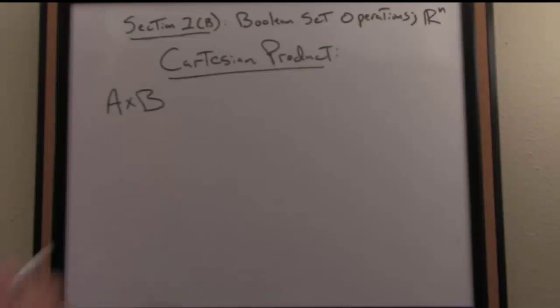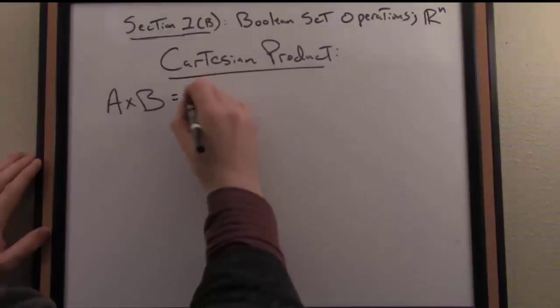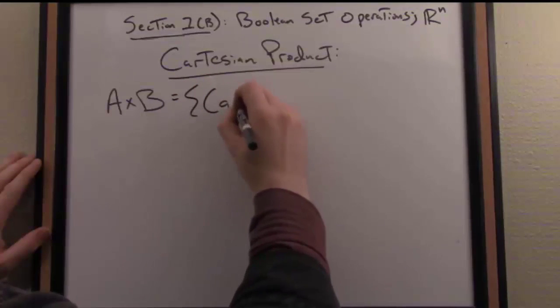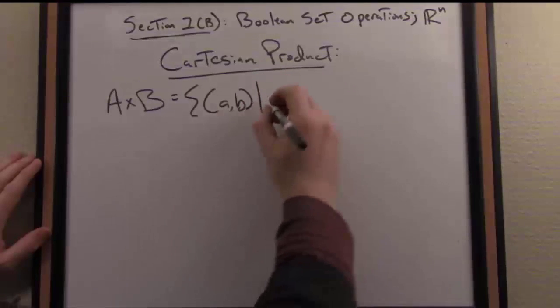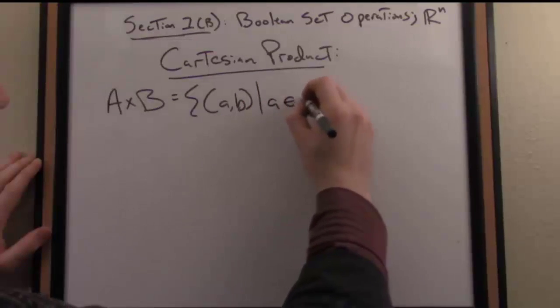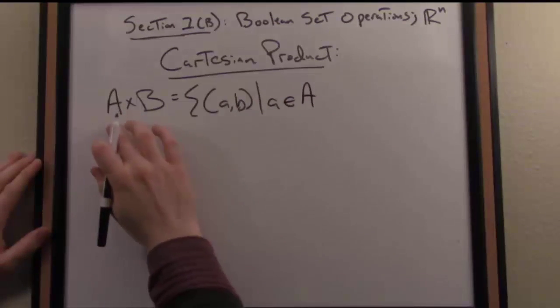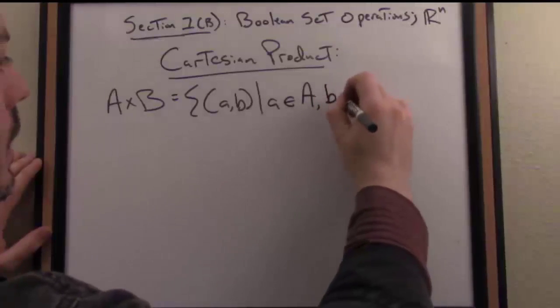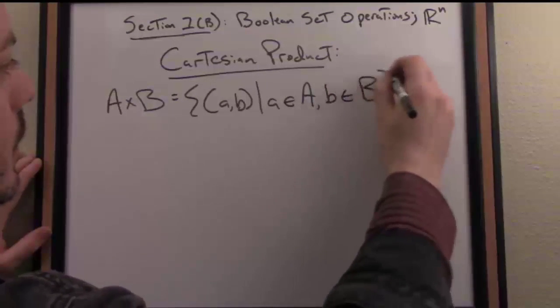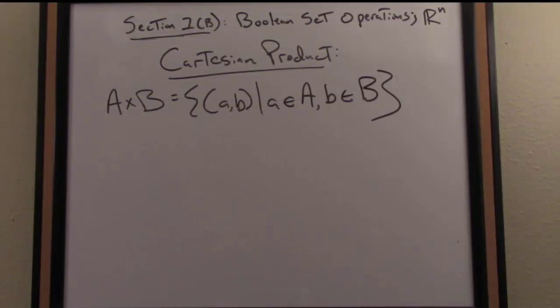If I have two sets A and B and I take the Cartesian product, or you can just say the product, then that is by definition the set of all ordered pairs A comma B such that A, the left element, comes from the first set or the left set and the B, the right element, comes from the second set or the right set. So there's the definition of the Cartesian product of two sets. Let's do a simple numerical example.